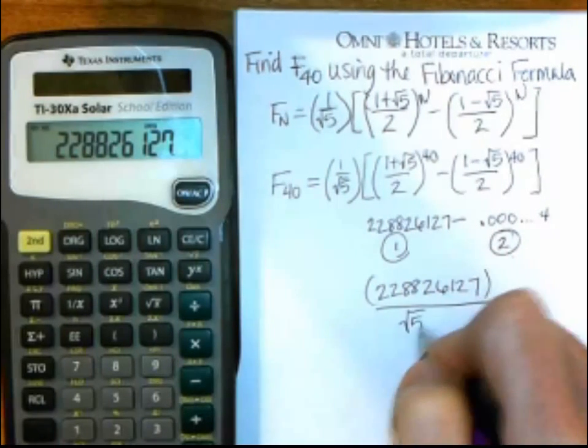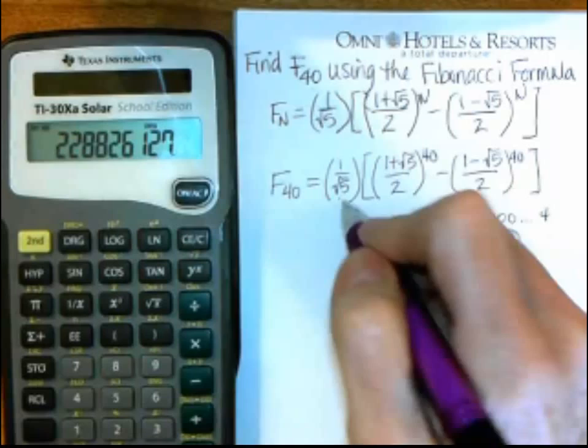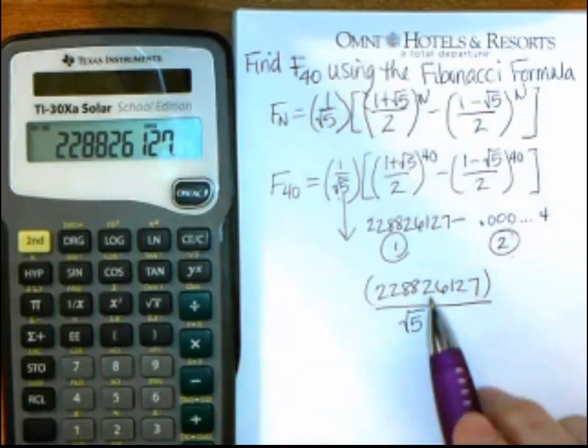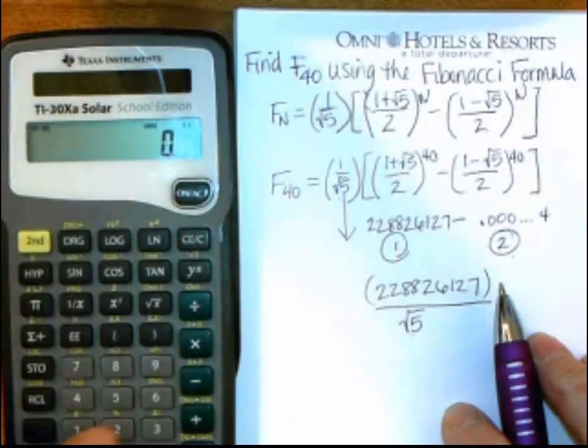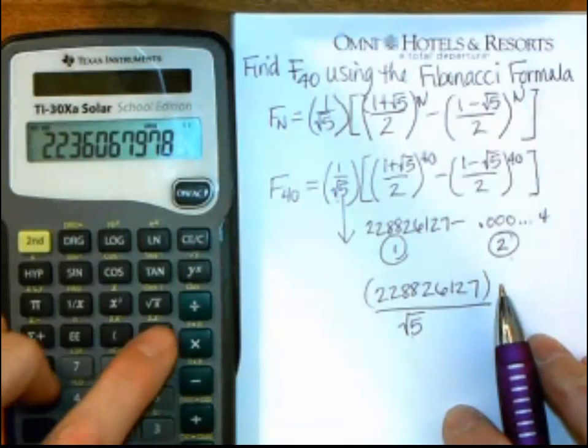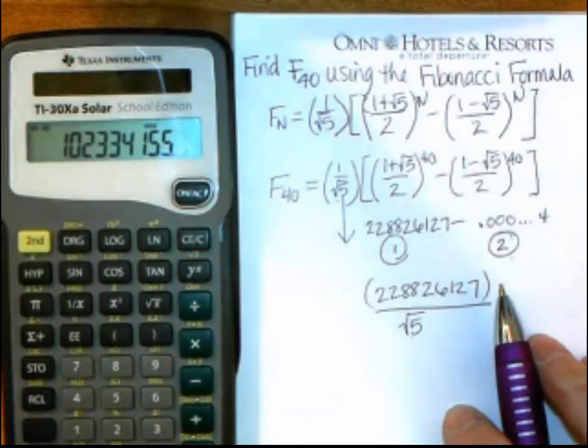It's dividing by square root of 5, to take this little piece right here, so divide by the square root of 5, so divided by, use your parentheses, put 5, and this square root, and your parentheses, and push equals.